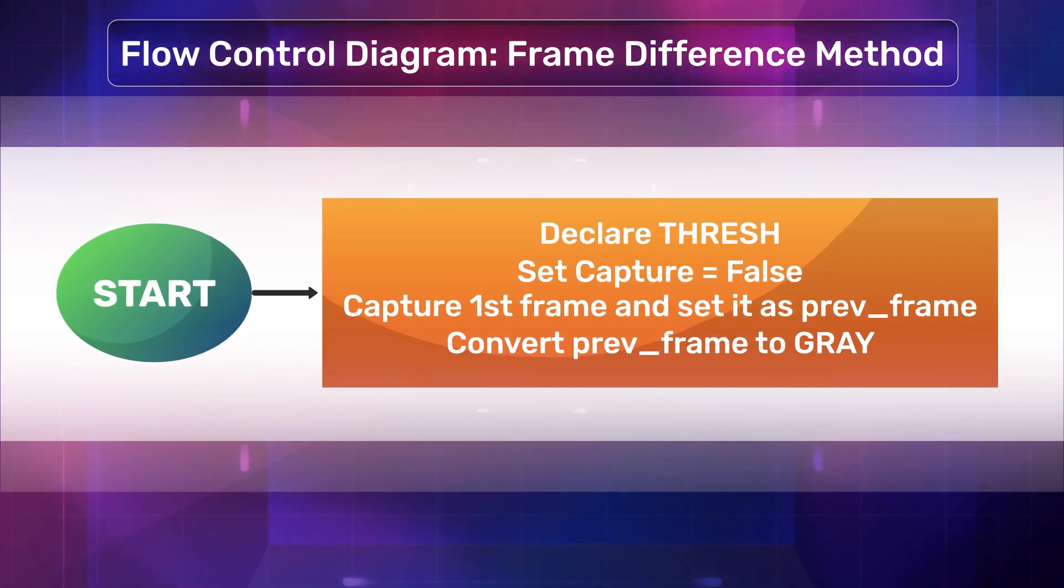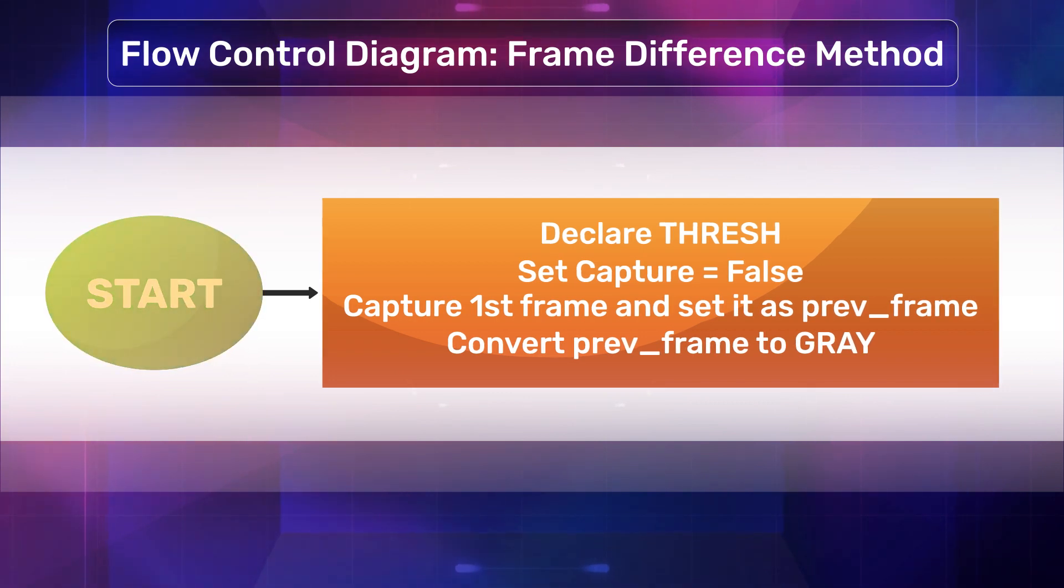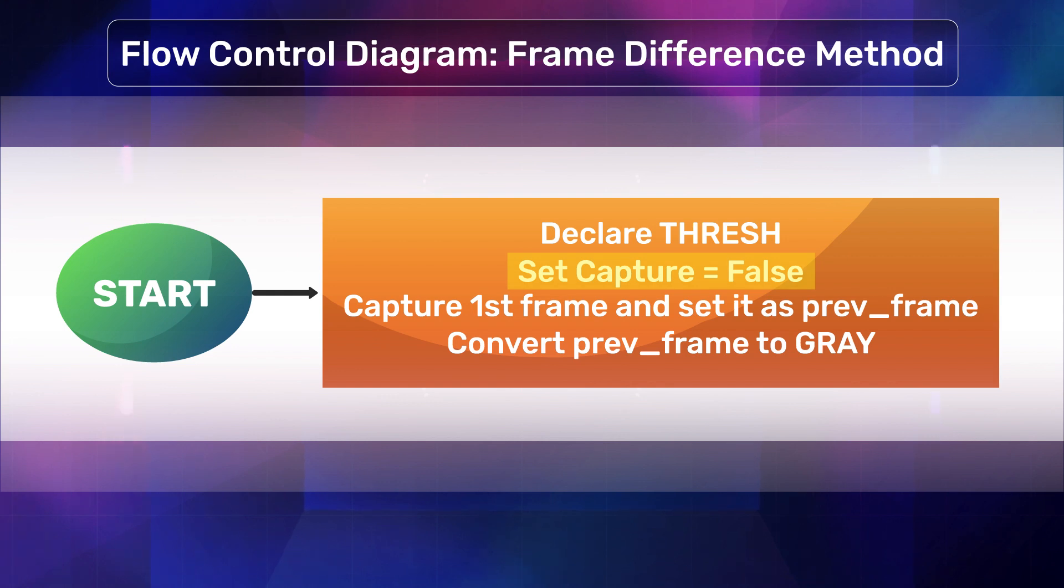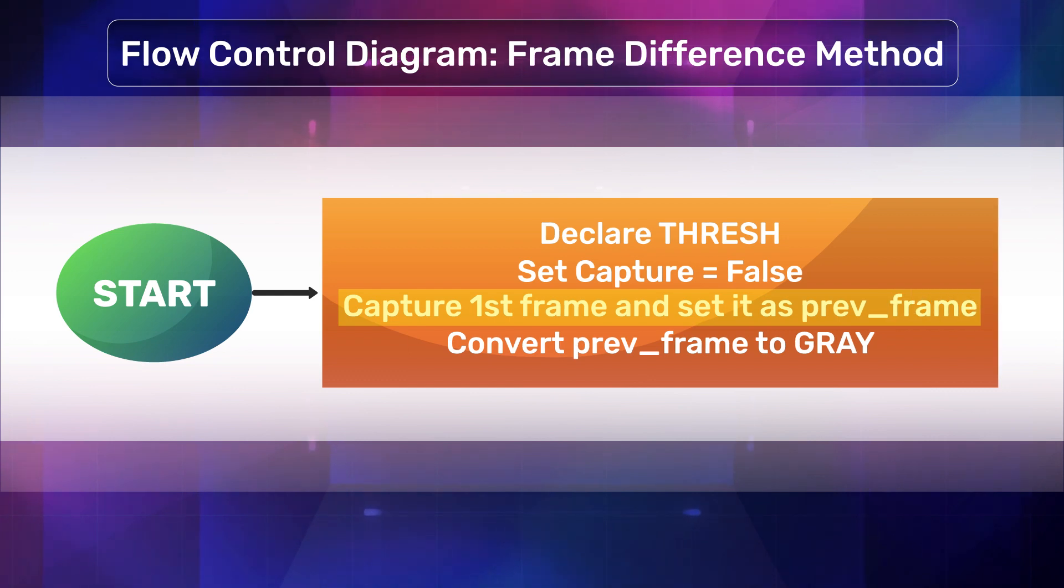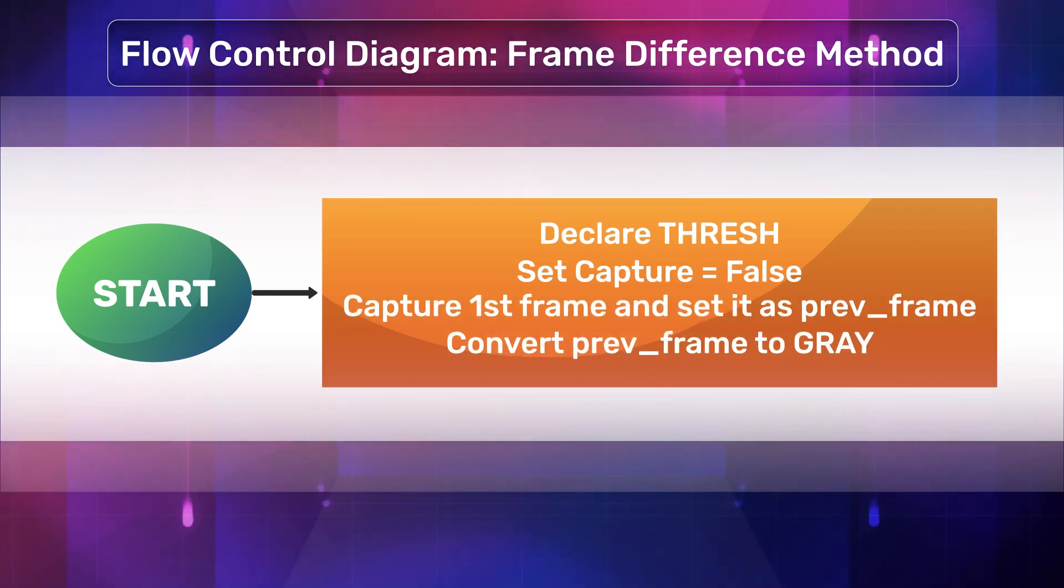To extract the images using frame differencing, we start by declaring a few variables. The threshold of the frame difference and capture flag initially set to false. Then we capture the first video frame and set it as the previous frame and convert it to grayscale. Similarly, this algorithm will always save the first frame.